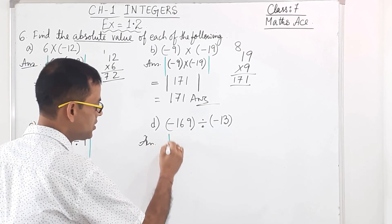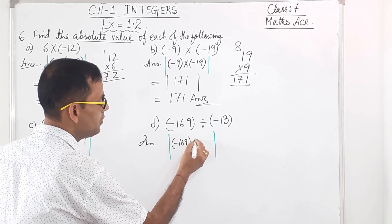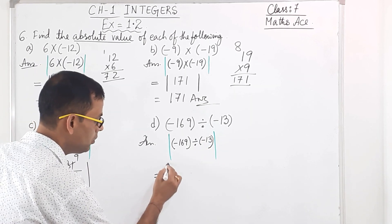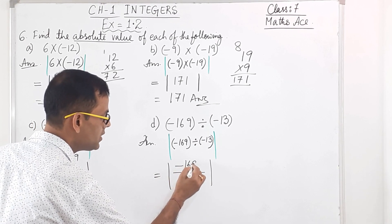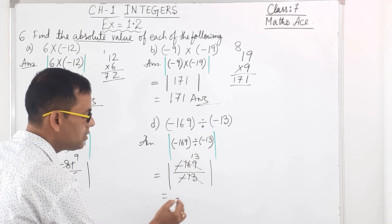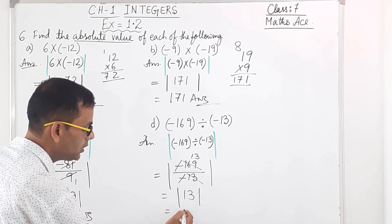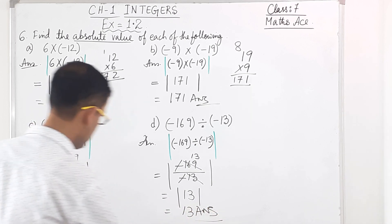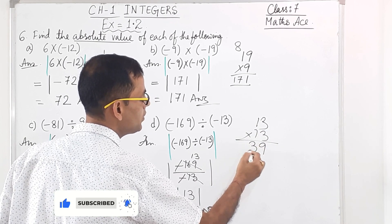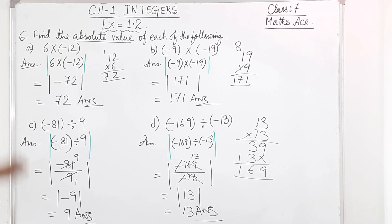Part D: absolute value of minus 169 divided by minus 13. Put the absolute symbol, write minus 169 over minus 13 inside. Minus minus cancels: 13 into 169 — 13 times 13 is 169 — so you get absolute value of 13, which equals 13. To verify: 13 times 13 is 3 threes are 9, carry 1, giving 169. Answer is 13.